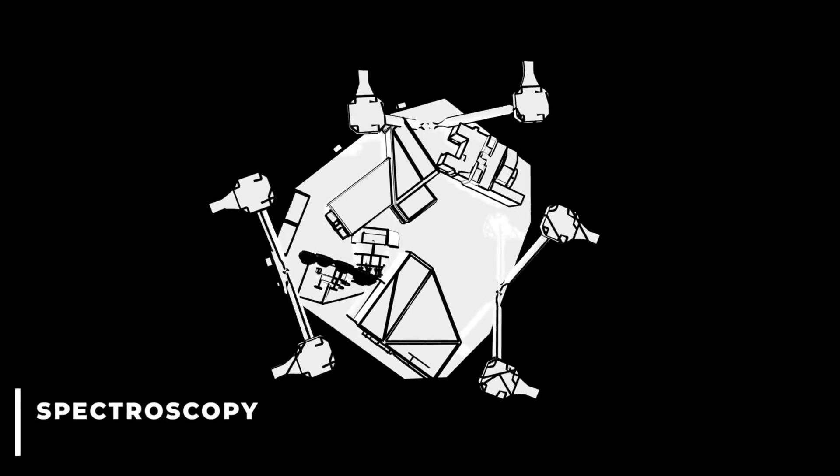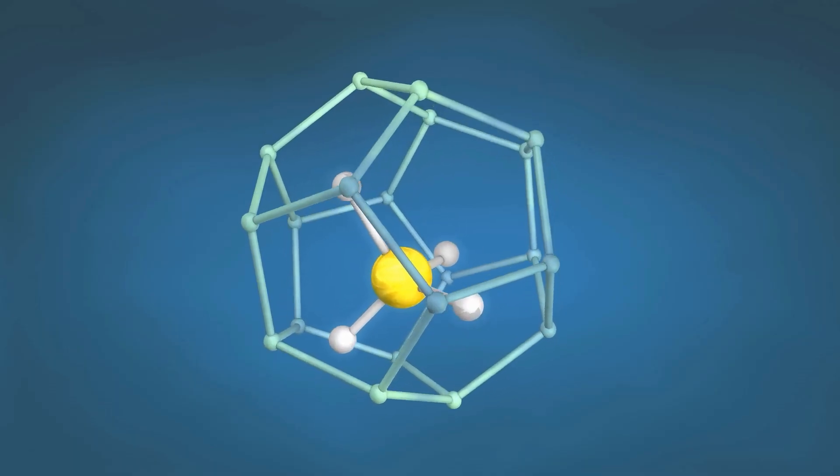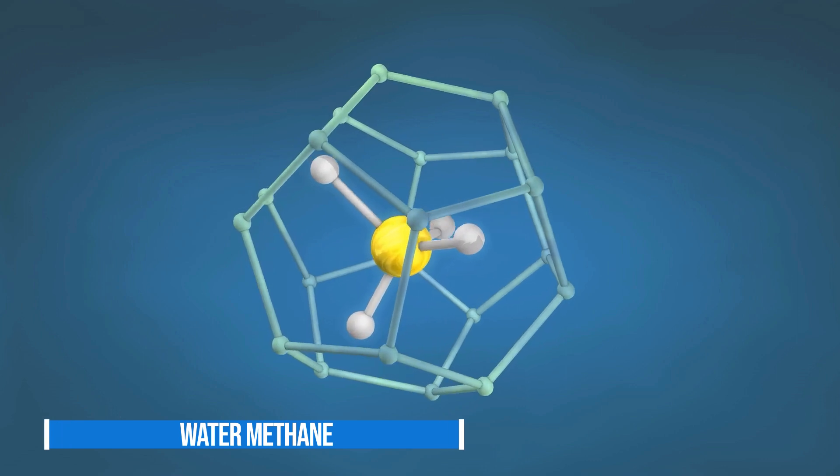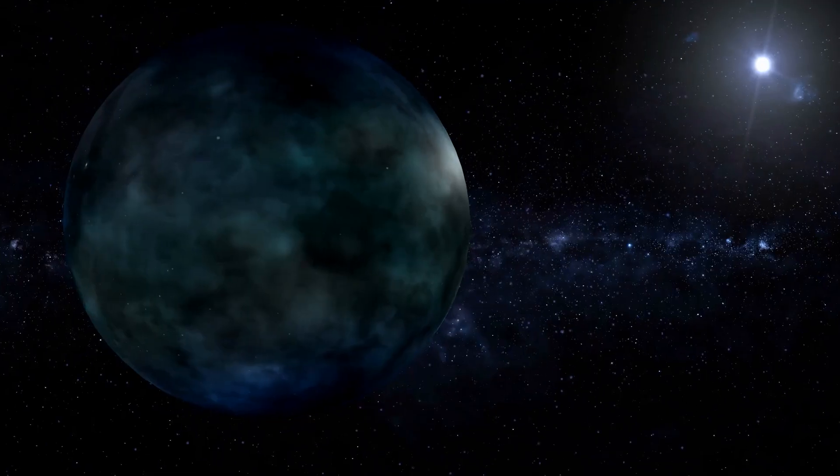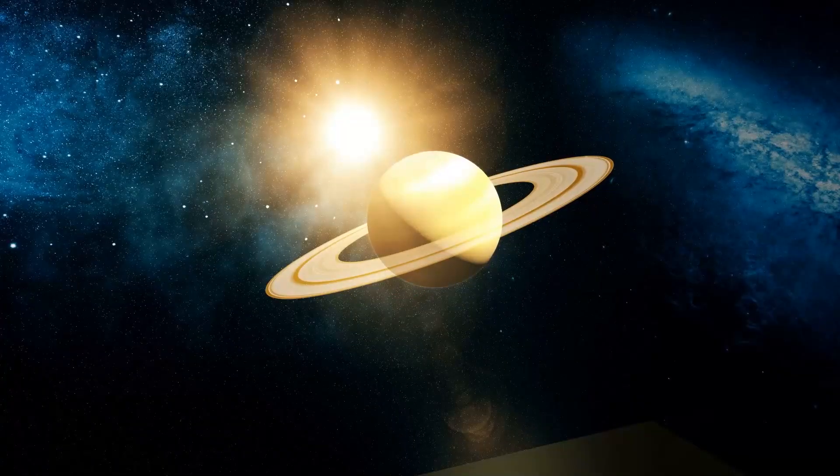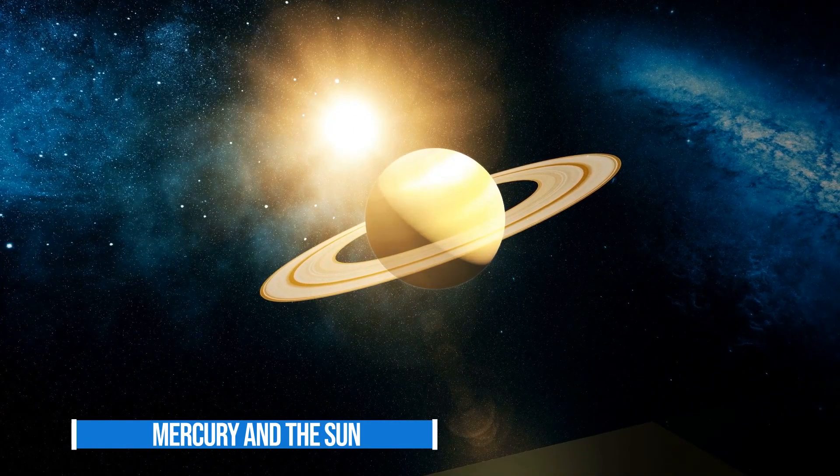While we're at it, let's quickly look at what spectroscopy is so that we can detect molecules like water, methane, and carbon dioxide on distant planets. WASP-96b orbits extremely close to its sun-like star, just one-ninth of the distance between Mercury and the sun.